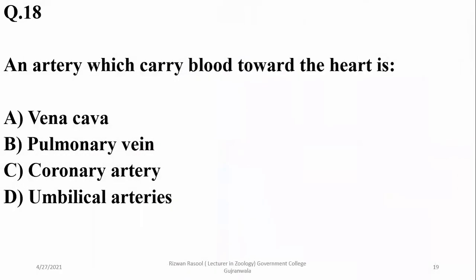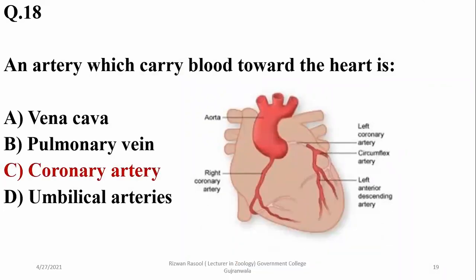Question number 18: an artery which carries blood towards the heart is the coronary artery. Vena cava is not an artery; pulmonary vein is not an artery — it's a vein; and umbilical arteries carry deoxygenated blood away from the placenta. Therefore, coronary artery is the right option.